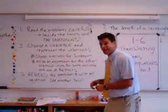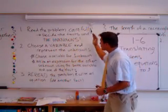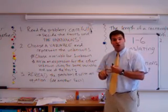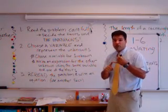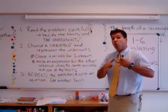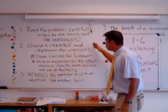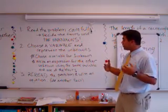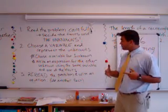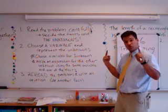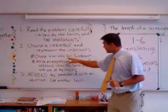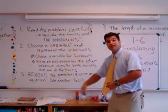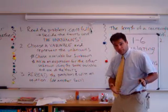Here are some guidelines for us. One: read the problem carefully. Decide the facts and the unknowns — basically, what do you know, what don't you know. Two: choose a variable and represent the unknowns. So, choose a variable and you have to represent those unknowns. We choose a variable for one of the unknowns, and then we write an expression for the other unknown.